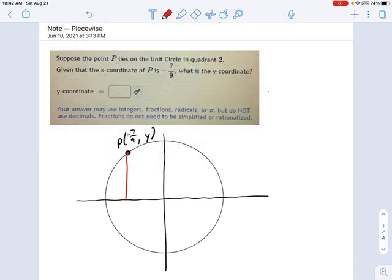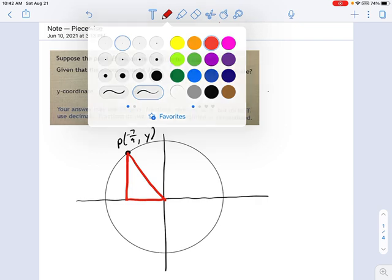You can still draw a triangle to help you through this, and then label the sides of the triangle, okay? So there's my quadrant 2 triangle, and let's label the sides.